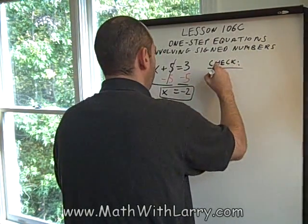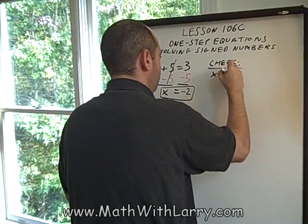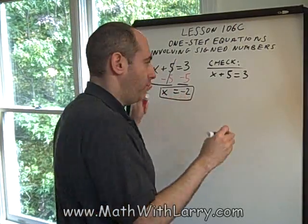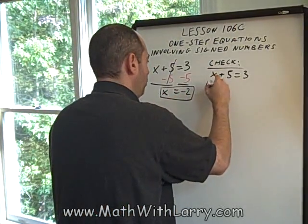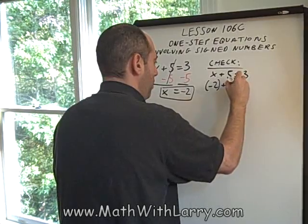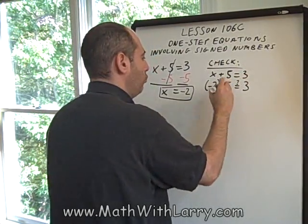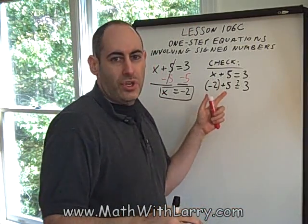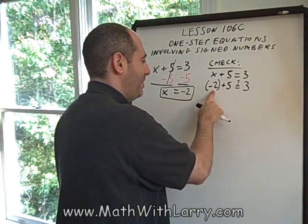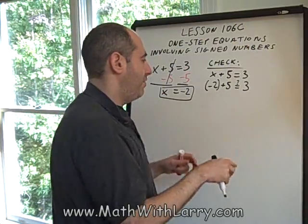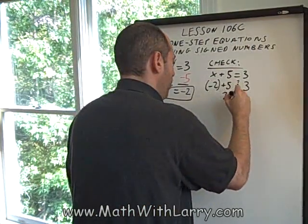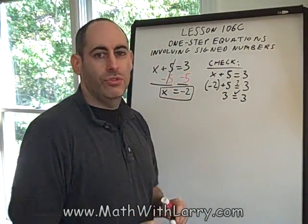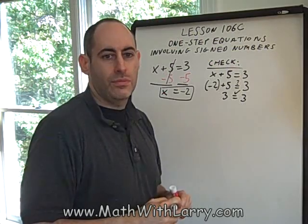Let's go ahead and check. So, recall how to check. I'll rewrite the original equation. And then I'll substitute the value of x that I think is right into the original equation. Negative 2 plus 5. Does that equal 3? Now, again, you have to feel comfortable with your signed number arithmetic. We can think of this as I owe 2 dollars, but I have 5. So, that leaves me with 3 dollars. 3 does equal 3. So, that shows that we have the correct value of x.